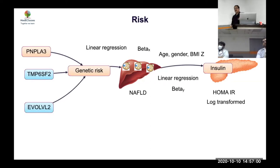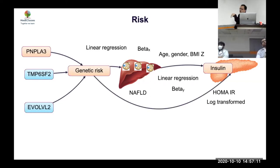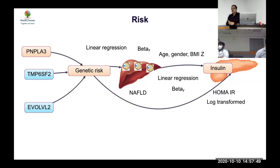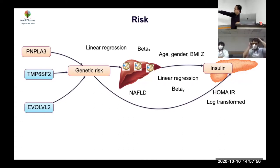Two key measures: beta X — the regression coefficient between genetic risk and NAFLD — and beta Y — the effect of NAFLD on HOMA-IR. Think of it as: you know the route from A to B (genetic risk to NAFLD) and B to C (NAFLD to insulin resistance). Then separately, you calculate the direct effect of the genetic risk on HOMA-IR — the direct route from A to C.